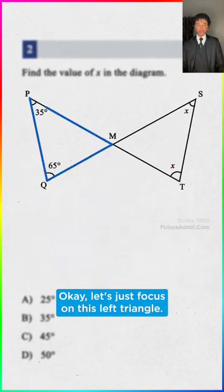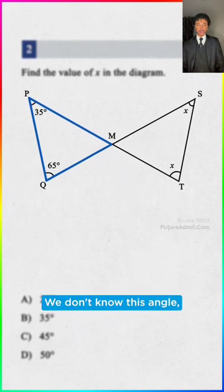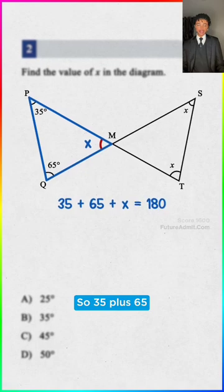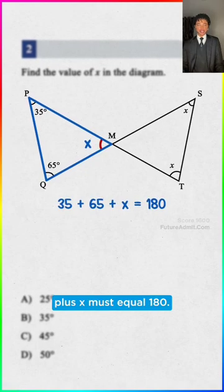Brain blast. Okay, let's just focus on this left triangle. We don't know this angle, but all these must add up to 180. So 35 plus 65 plus x must equal 180, so this is 80.